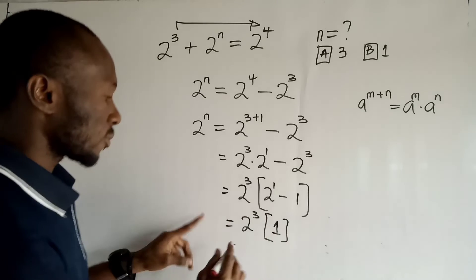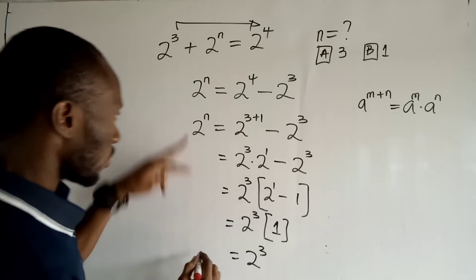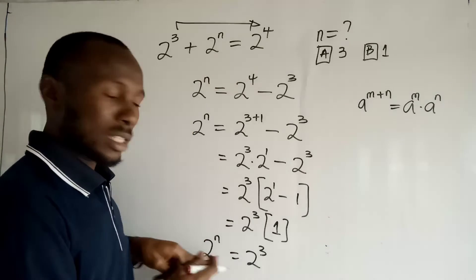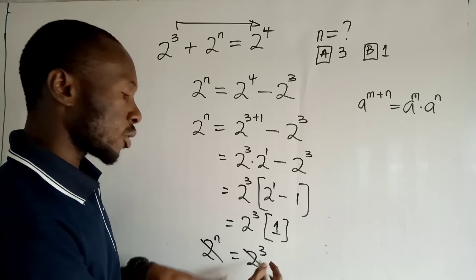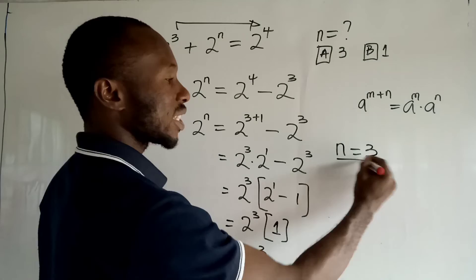And finally, we can now say that this guy is equal to 2 to the power 3. Remember, we have 2 to the power n right here. You can see that 2 to the power n is equal to 2 to the power 3. Now we can cancel out the base because the base is the same, and we equate the exponent. So n is equal to 3.